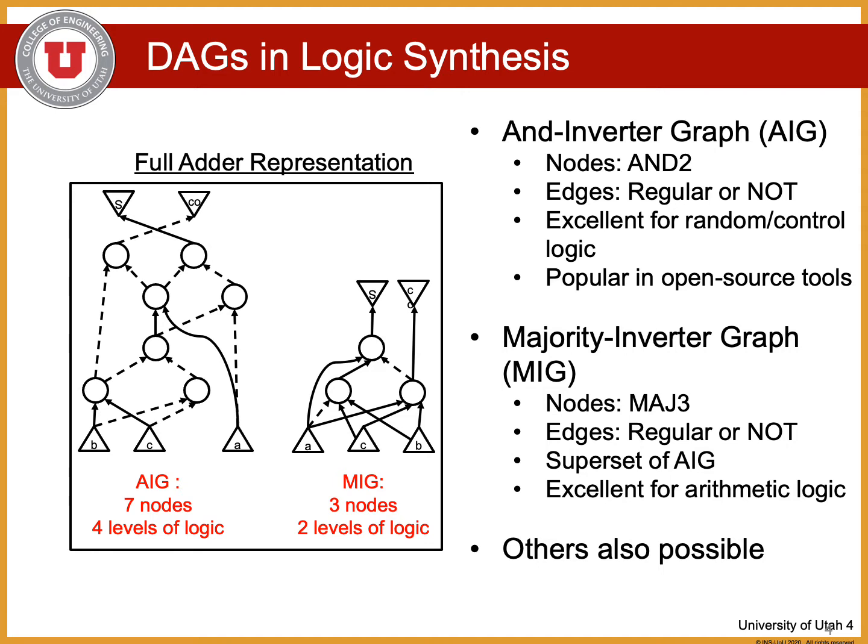There are two types of directed acyclic graph you need to know for this talk. The first is the AND inverter graph, as used by the popular tool ABC. In an AND inverter graph, or AIG, nodes in the graph represent the AND of 2 function. Edges represent connections between nodes and can either be regular or inverted, representing the NOT function.